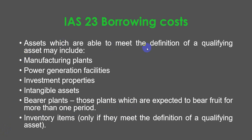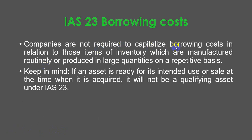Assets which meet the definition of a qualifying asset may include manufacturing plants, power generation facilities, investment properties, intangible assets, and bearer plants — those plants expected to bear fruits for more than one period. Inventory items may also qualify, but companies are not required to capitalize borrowing costs for inventory manufactured routinely or produced in large quantities on a repetitive basis.